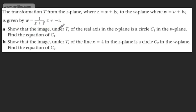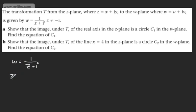In part A, we need to show that the image under T of the real axis in the Z-plane is the circle C1 in the W-plane, and find the equation of C1. On the Z-plane, the real axis means Y equals 0. Starting with W equals 1 over Z plus i, we make Z the subject: multiplying both sides by Z plus i and dividing by W gives Z plus i equals 1 over W, so Z equals 1 over W minus i.